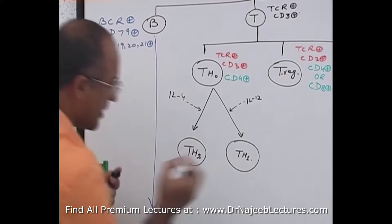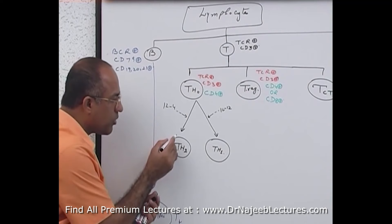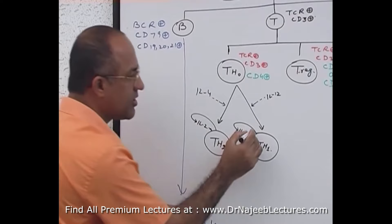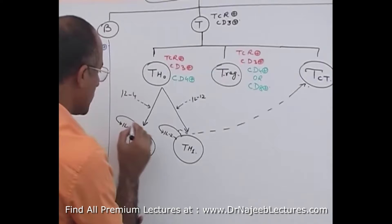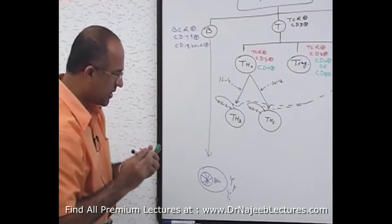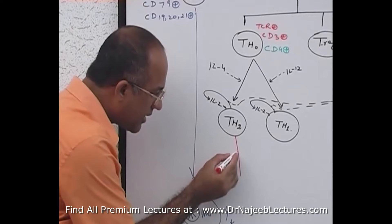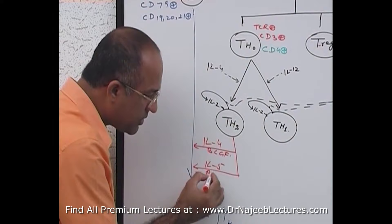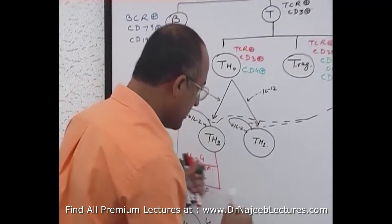Both T helper 1 and T helper 2 produce interleukin-2, which acts on these cells and also on T cytotoxic cells to stimulate them. Special products of T helper 2 are interleukin-4, the B cell growth factor, and interleukin-5, the B cell differentiation factor. T helper 1 produces tumor necrosis factor and gamma interferon.